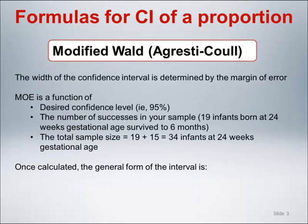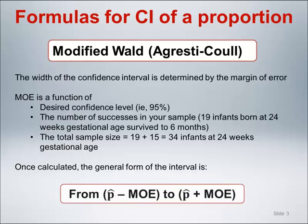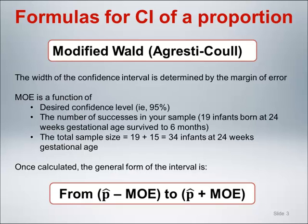The width of the confidence interval is determined by the margin of error. The margin of error is a function of the desired confidence level — say 95% — the number of successes in your sample (19 infants born at 24 weeks gestational age who survive to 6 months), and the total sample size, which equals the number of successes plus the number of failures, a total of 34 infants. Once the MOE is calculated, the interval is formed by subtracting and adding the MOE from the sample estimate.